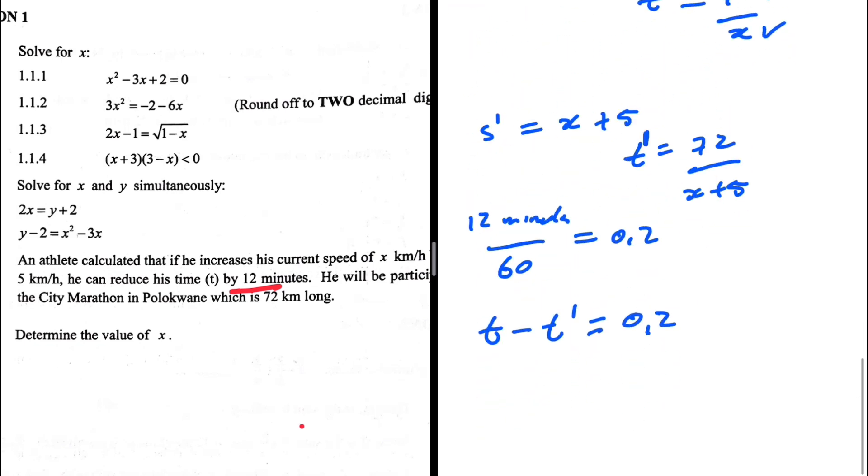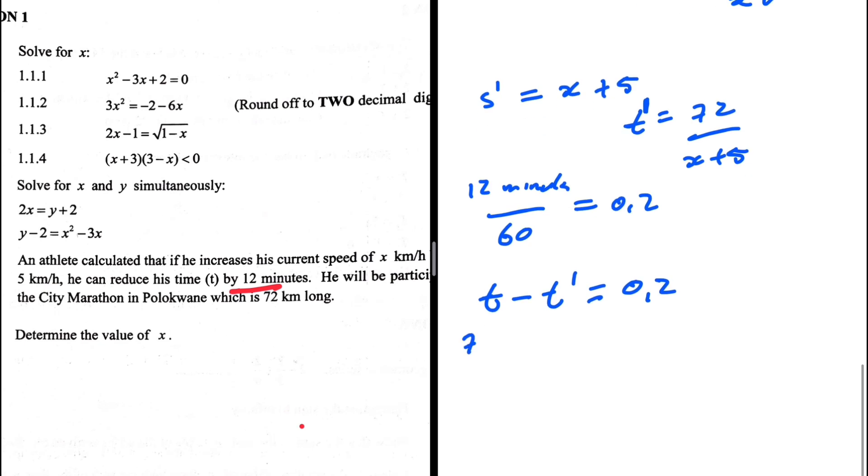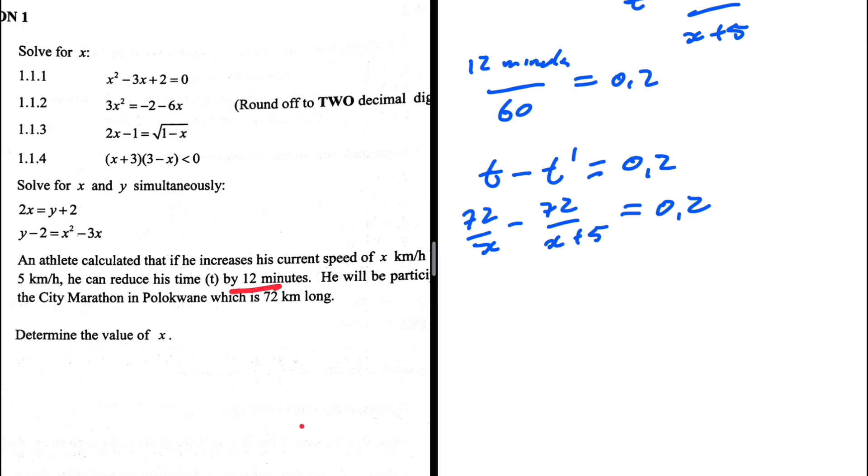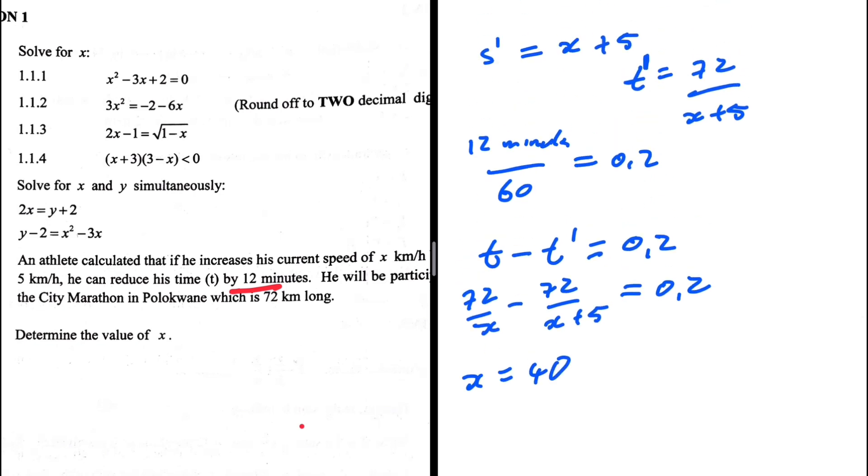So t, 72 over x, minus t prime, 72 divided by x plus five, equals 0.2. When we have this equation, it's just a matter of solving for x. And in doing that, you will end up with x being equals to 40. How you actually get from here until x equals 40 is really up to you, how you choose to manipulate it, but you have to end up here one way or another. There we go.